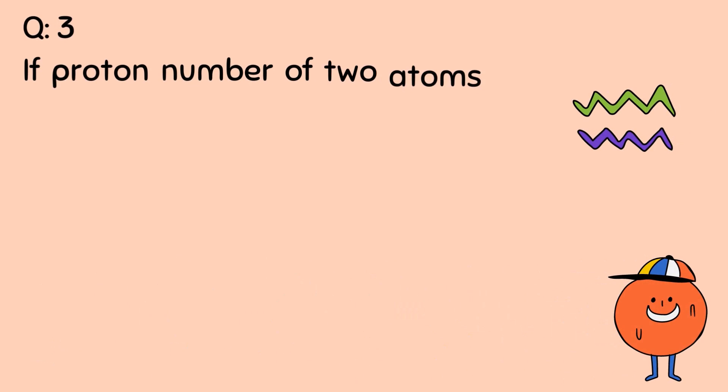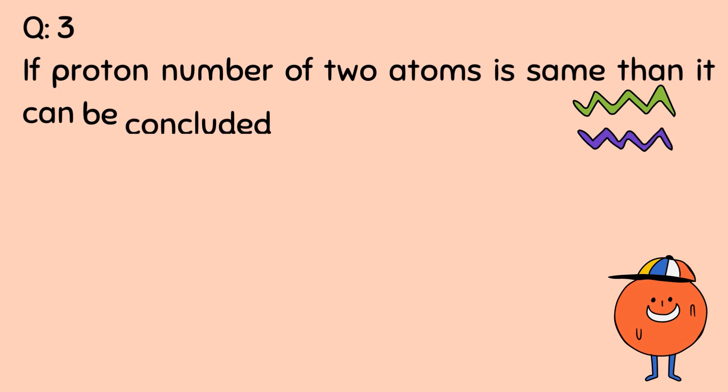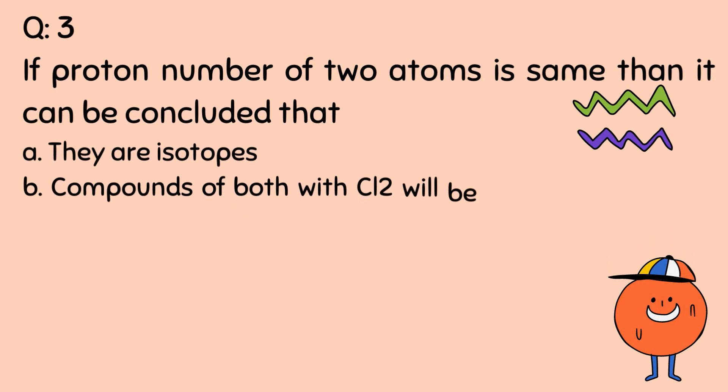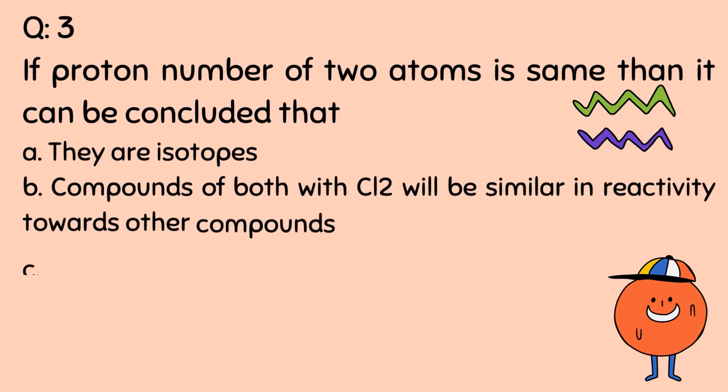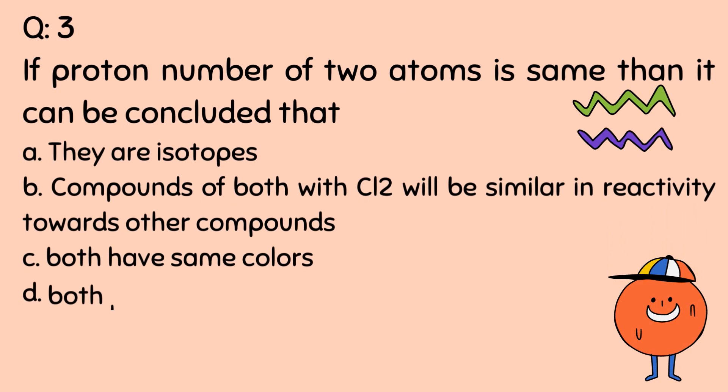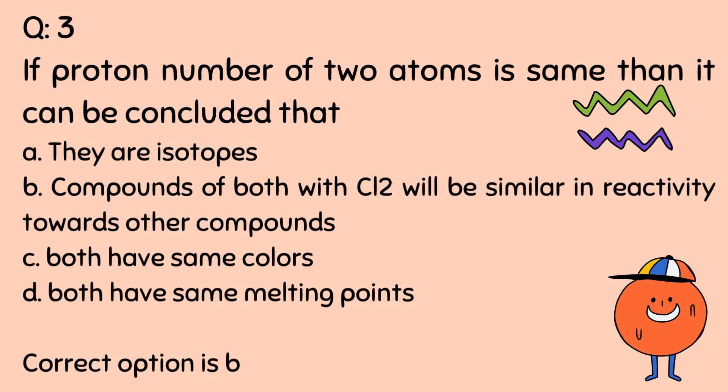Question number 3. If proton number of 2 atoms is same, then it can be concluded that: A. They are isotopes. B. Compounds of both with Cl₂ will be similar in reactivity towards other compounds. C. Both have same colors. D. Both have same melting points. Correct option is B.